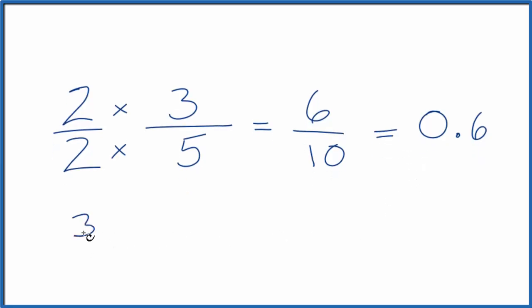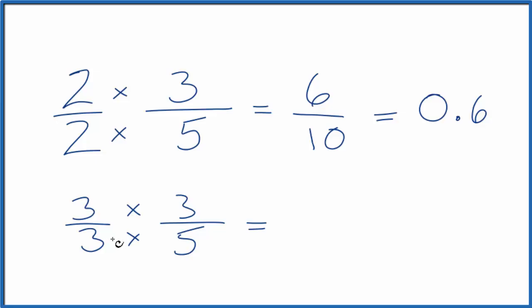Let's try another one. Let's multiply by 3 over 3. Again, 3 over 3, that equals 1, so we're just multiplying by 1. Now 3 times 3 is 9, 3 times 5, that's 15. And again, we have another equivalent fraction for 3 fifths. Divide 9 by 15, 0.6.